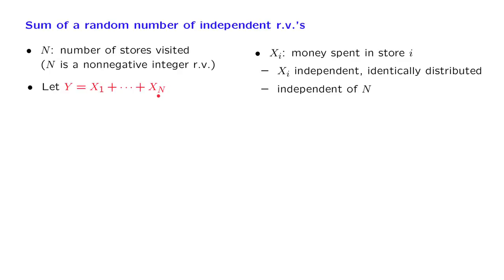How do we deal with this situation? One approach that's always worth trying, when faced with a complicated problem, is to try to condition on some information that will make the problem easier. In this case, we can condition on the value of capital N taking a fixed specific value, because then we will be dealing with the sum of a finite, fixed number of random variables — a situation we have encountered before and know how to deal with.